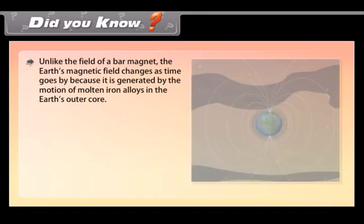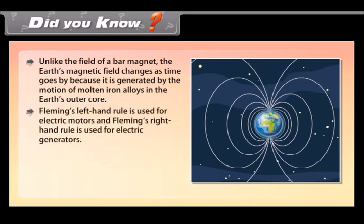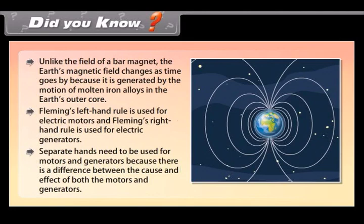Did you know? Unlike the field of a bar magnet, the Earth's magnetic field changes as time goes by because it is generated by the motion of molten iron alloys in the Earth's outer core. Fleming's left-hand rule is used for electric motors and Fleming's right-hand rule is used for electric generators. Separate hands need to be used for motors and generators because there is a difference between the cause and effect of both the motors and generators.